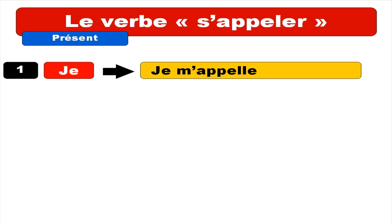So first form for je: it's je m'appelle. That's the particularity of these verbs — you've got to add something, and usually for the first form it's 'me.' But then as you've got this vowel, for the verb appeler, the 'e' disappears, and you get je m'appelle. Repeat.